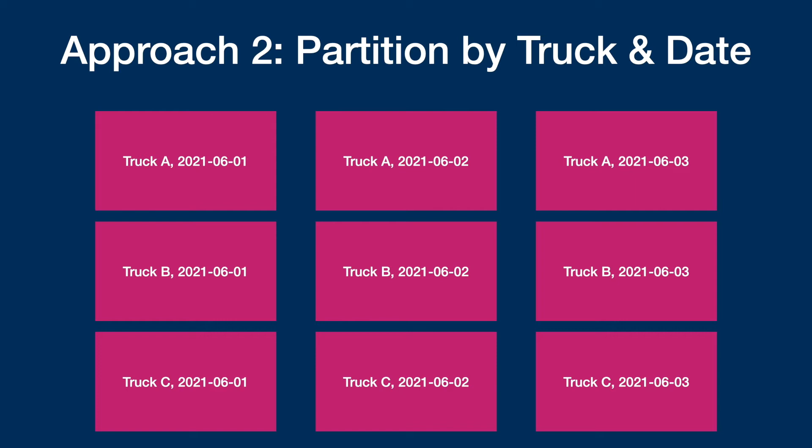Now let's take a look at the second approach, which is to partition by truck and date. Here you can see we have six partitions. Each partition contains data for one truck on a given day. In the top left you have truck A on June 1st 2021, then truck A June 2nd, then June 3rd — so every partition has one truck's worth of data for that one day.